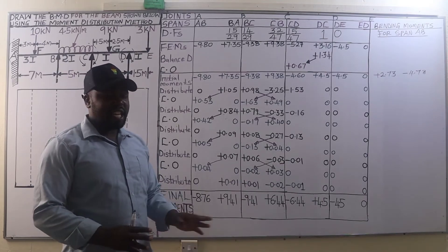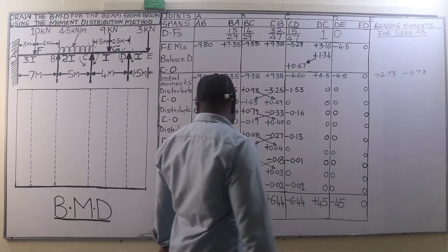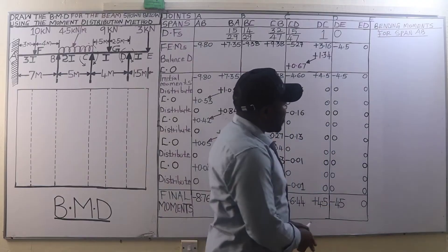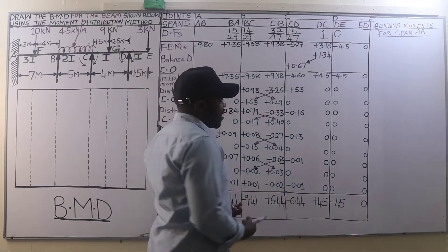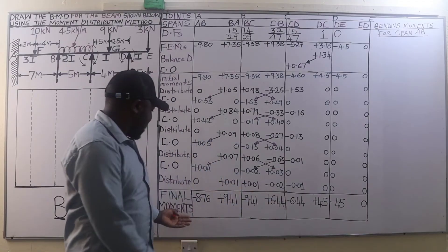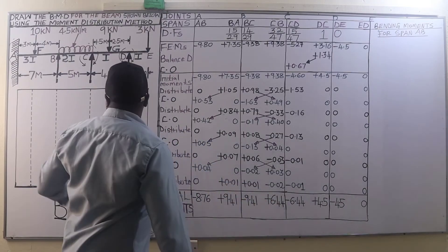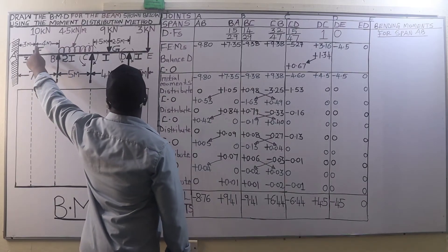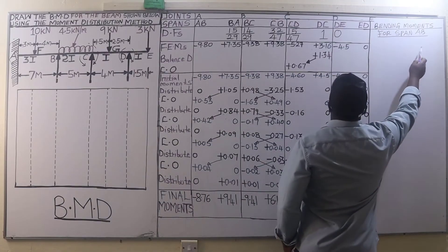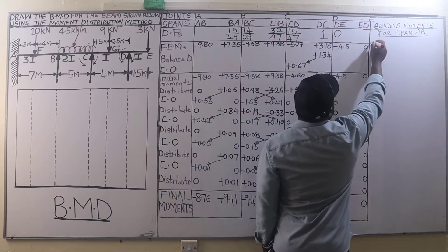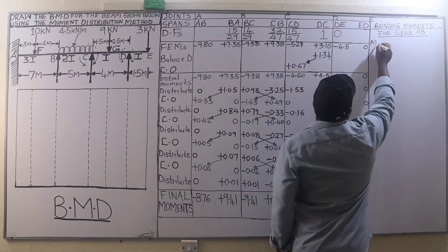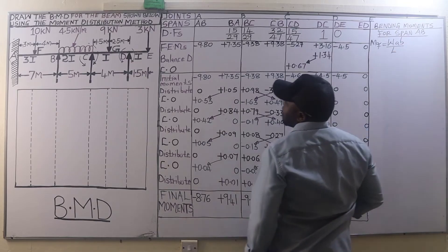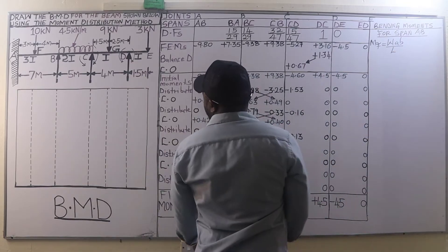After getting the final support moments, we determine the bending moments due to vertical loads. These are support moments at all the supports. Starting with span AB, the bending moment at F is given by W·a·b divided by L, since that span is loaded with a point load.